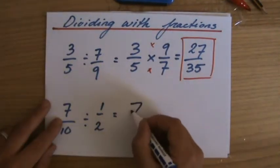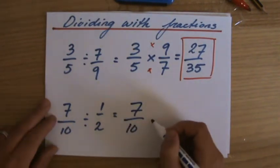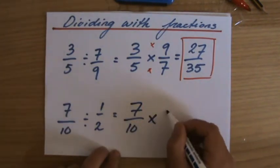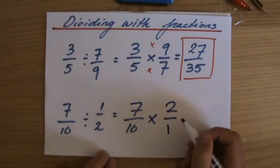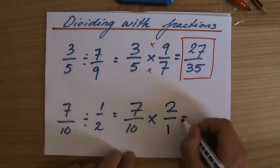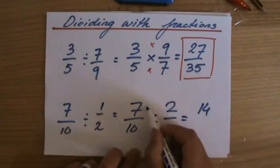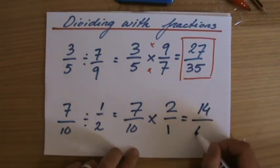Same for the second question. 7 over 10. Rather than dividing it by half, I'll times it by 2 over 1. The reciprocal equals 14, 7 times 2 over 10.